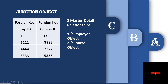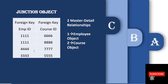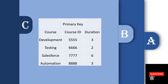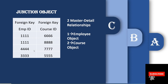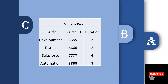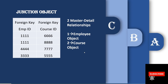The second master-detail relationship is between the Course table and the junction object. If a course is deleted from the Course table, the corresponding records in the junction object are also automatically deleted. So any junction object has two master-detail relationships: one between the first object and the junction object, and one between the second object and the junction object. In our example, that is the Employee table with the junction object, and the Course table with the junction object.